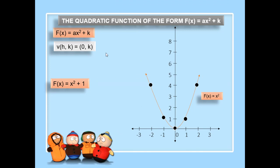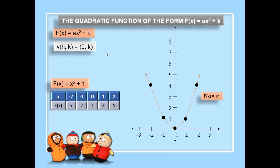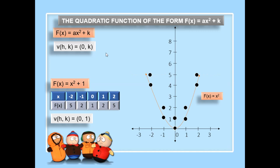For example, we have the quadratic function defined by x squared plus 1 and its corresponding table of values. If x is equal to 0, the value of the function is 1, so the vertex is at (0, 1). If x is equal to negative 1 and positive 1, the value of the function is 2. If x is equal to negative 2 and positive 2, the value of the function is 5. So our graph looks like this.